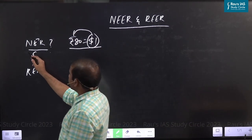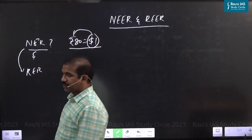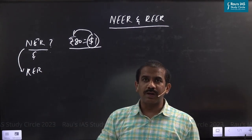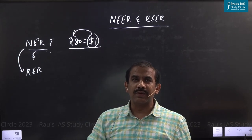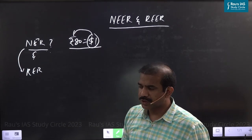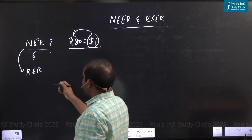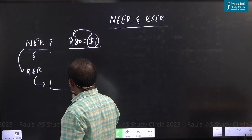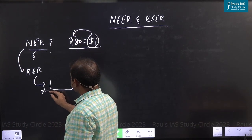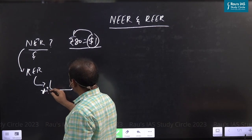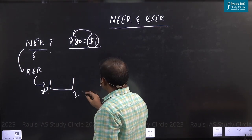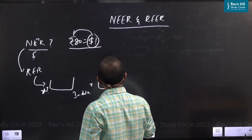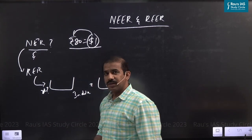Real exchange rate is nominal adjusted to inflation. Whenever you come across the terms nominal and real, just keep that in mind — a real variable is always a nominal variable adjusted to inflation. In this case, you could express the real exchange rate as the number of baskets of Indian goods that you are willing to forego in return for one similar basket of American goods.